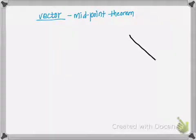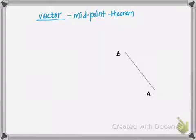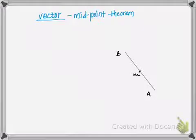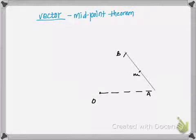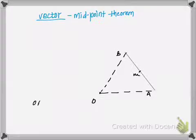I'm going to make a line segment AB. I'm going to select one point right at the middle and call it M. Now I'm going to draw a position vector for point A and point B. For position vectors, we take a point at the origin, that is (0,0), and join it to point A and point B on line segment AB. So OA is the position vector for point A.